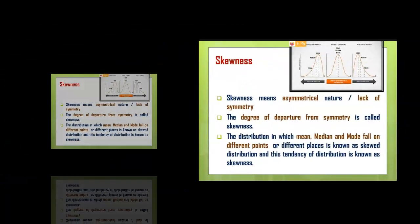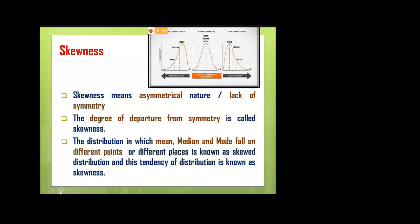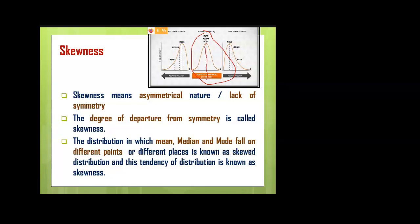Skewness means the asymmetrical nature and lack of symmetry. In the normal probability curve, if you divide the curve at the center, you get two equal parts — 50% on the left side and 50% on the right side. But in the case of skewed distributions, dividing at the center does not give two equal parts.